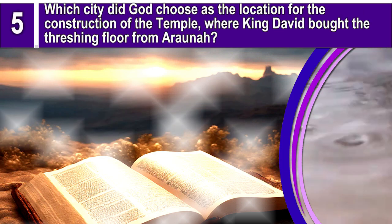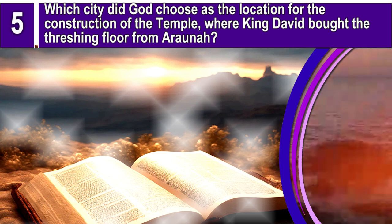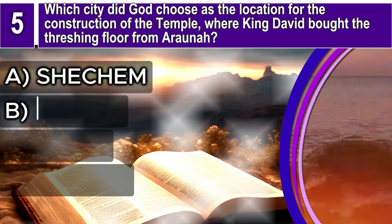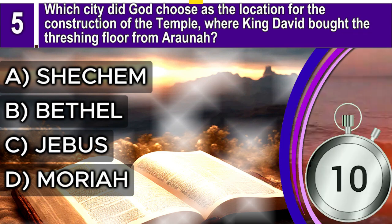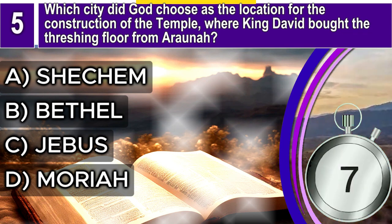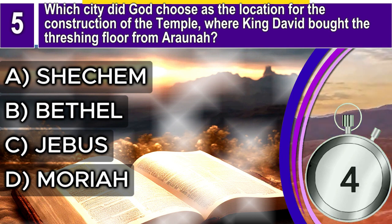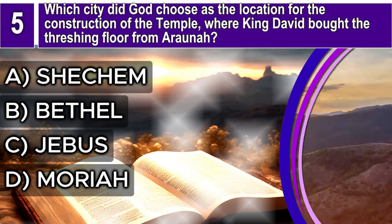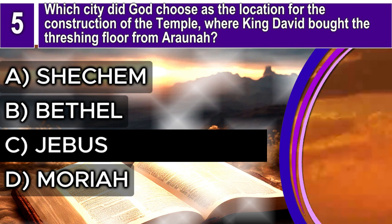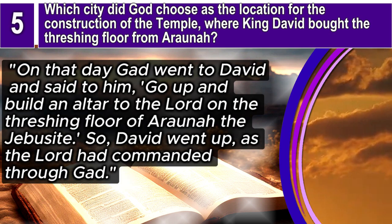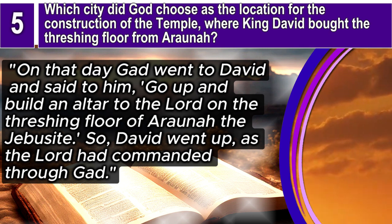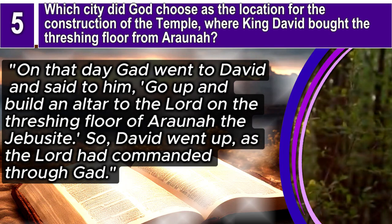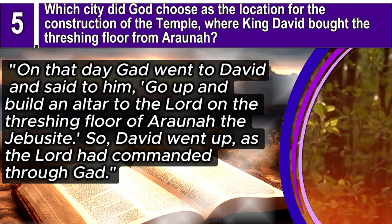Question 5. Which city did God choose as the location for the construction of the temple where King David bought the threshing floor from Arana? A. Shechem, B. Bethel, C. Jebus, D. Moriah. The correct answer is C. Jebus, Jerusalem. 2 Samuel 24, verses 18–19 says: On that day Gad went to David and said to him, Go up and build an altar to the Lord on the threshing floor of Arana the Jebusite. So David went up as the Lord had commanded through Gad.